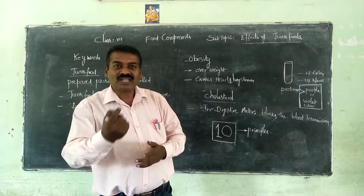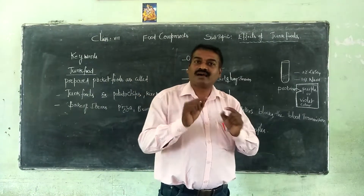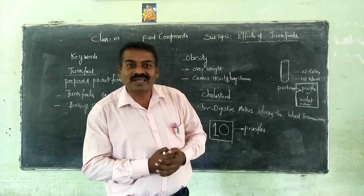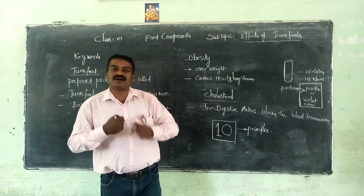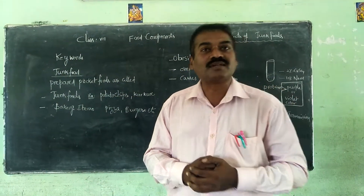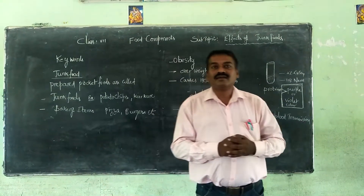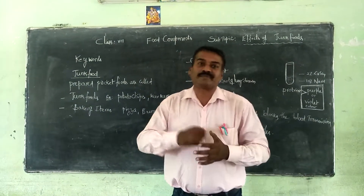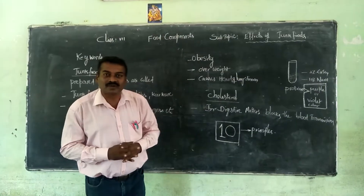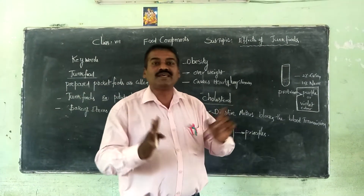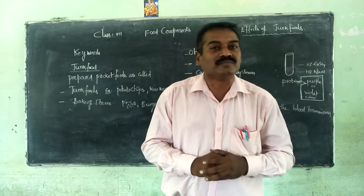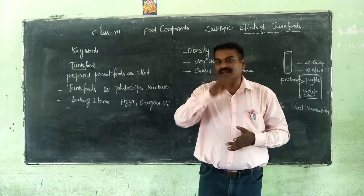This leads to diseases such as lung diseases and heart diseases due to blockages in the blood vessels. It affects the movement of blood and causes heart and lung diseases. To counter this, we need to follow some principles. I have prepared 10 principles for you children — please write them down in your notebook and try to implement them in your life to avoid obesity and all these problems.